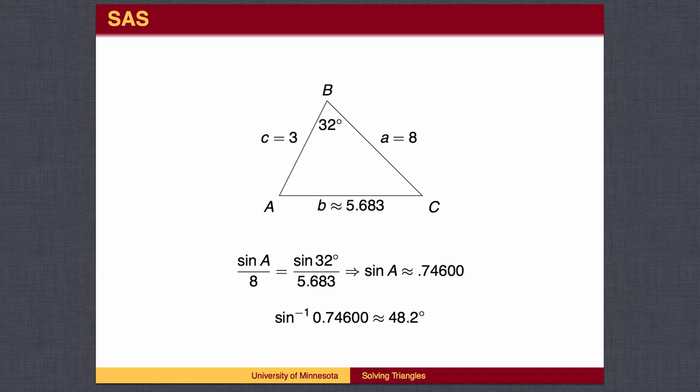If you try to find the angle opposite the longest side, it may be larger than 90 degrees. When you use the inverse sine function, your calculator will give you a first quadrant angle. But the actual answer may be in the second quadrant. It is better to find the smaller angles first.